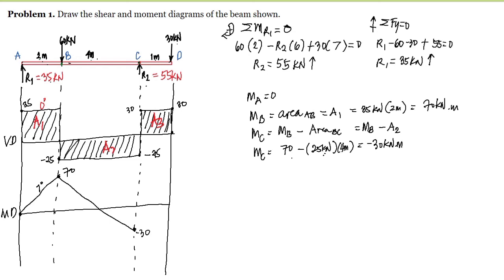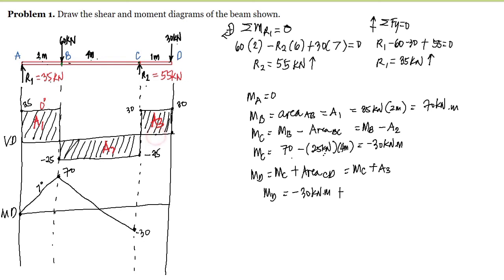The moment at point D equals the moment at C plus Area 3 between C and D. Moment at D equals negative 30 kN·m plus Area 3: 30 kN times 1 meter equals 30, so moment at D equals zero. The moment diagram closes at zero, as expected. Since the shear in segment CD is degree 0, the moment is again degree 1 — a straight line.